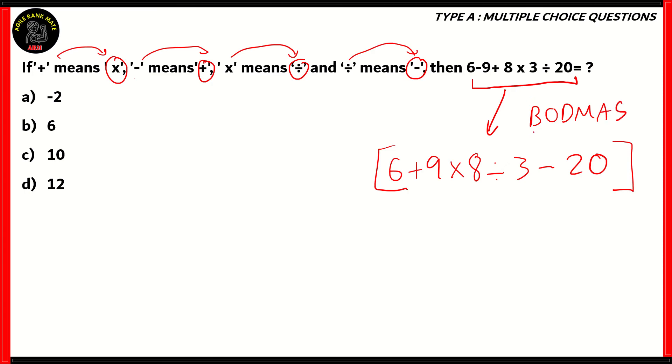When solving these kinds of questions, it's a good idea to use BODMAS. So bracket, of, division, multiplication, addition, and subtraction. That's how we're going to solve the arithmetic operators in this particular expression. You have multiplication and division, which should be done first, followed by addition and subtraction. We have 9 times 8 divided by 3. 9 times 8 gives you 72. 72 divided by 3 is 24. So basically this expression becomes 6 plus 24 minus 20. 6 plus 24 is 30. 30 minus 20 equals 10.